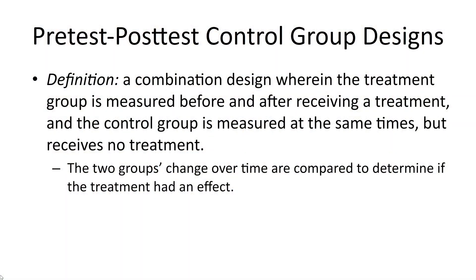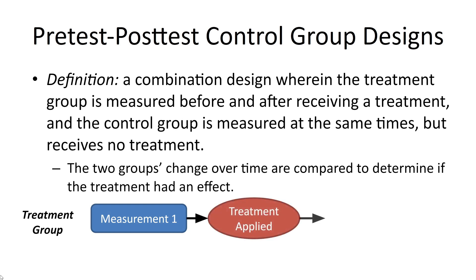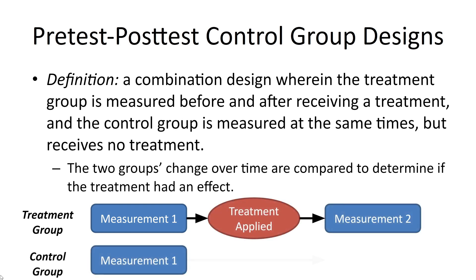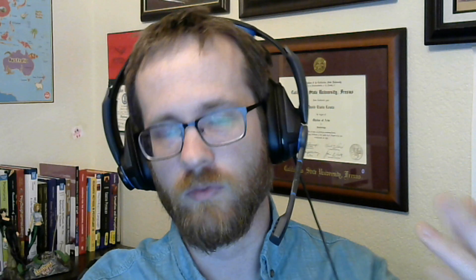There are many variations, like the pre-test post-test control group design, which is a combination design where the treatment group is measured before and after receiving a treatment, and the control group is measured at the same times but simply does not receive a treatment. Both groups are measured twice, but the control group has nothing applied to them. This is actually a really great design because it helps eliminate a lot of those time-related confounds — like history, maturation, and instrumentation changes.